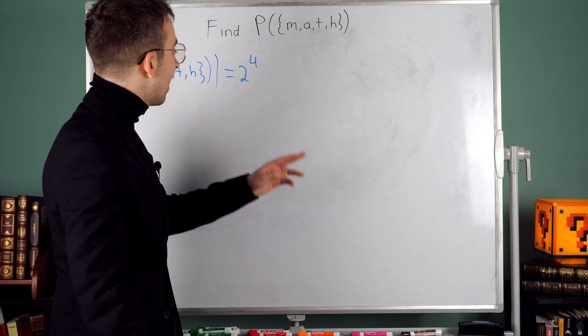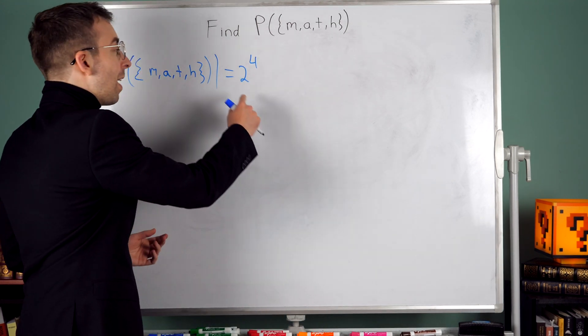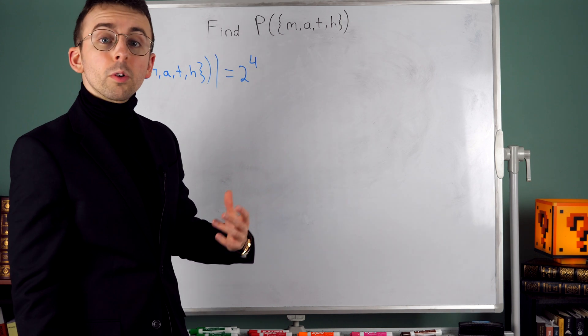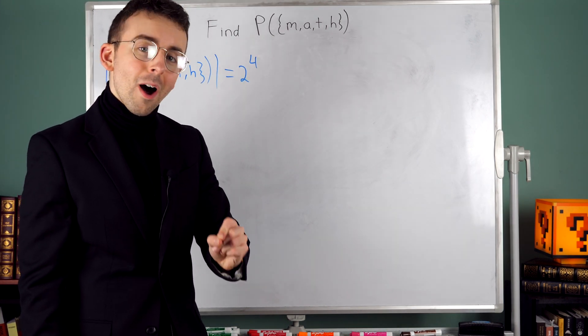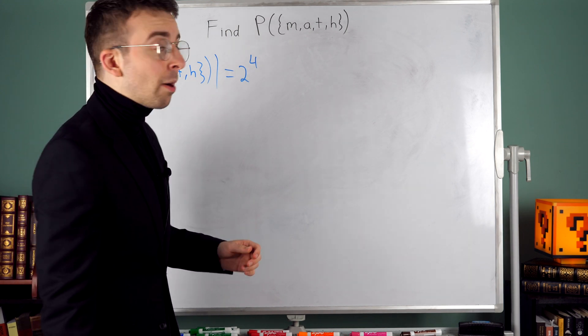For each of them we have two choices: included in a subset or don't include it in a subset. That means there are 2 to the power of 4 total possible subsets, and all of them will be in the power set.